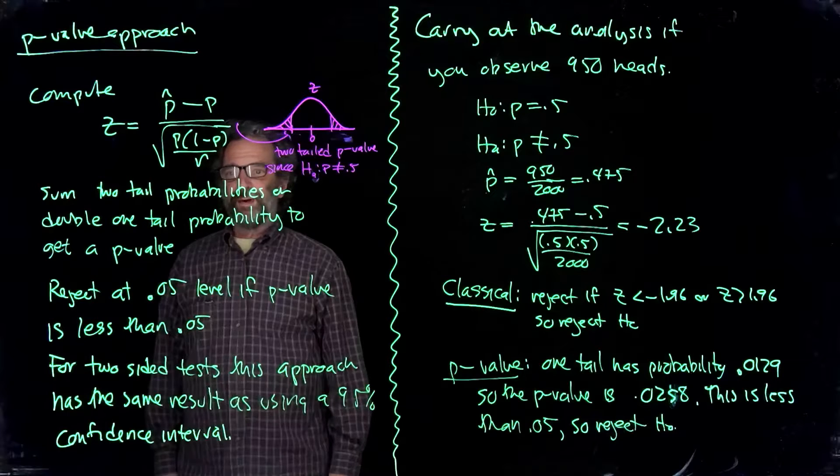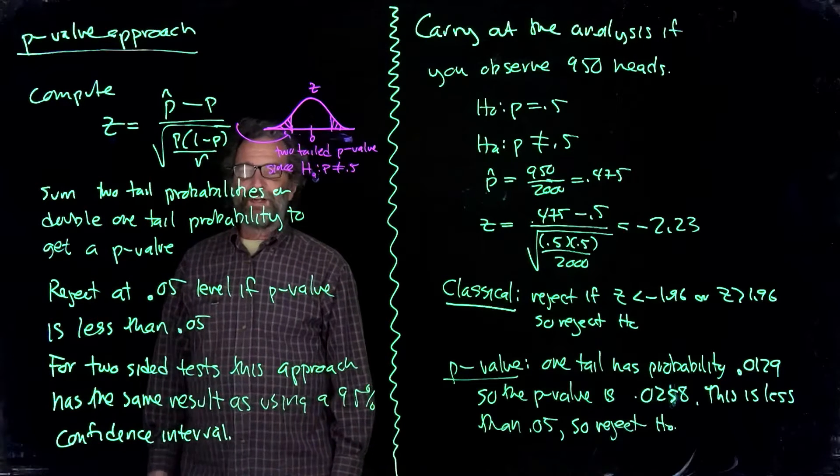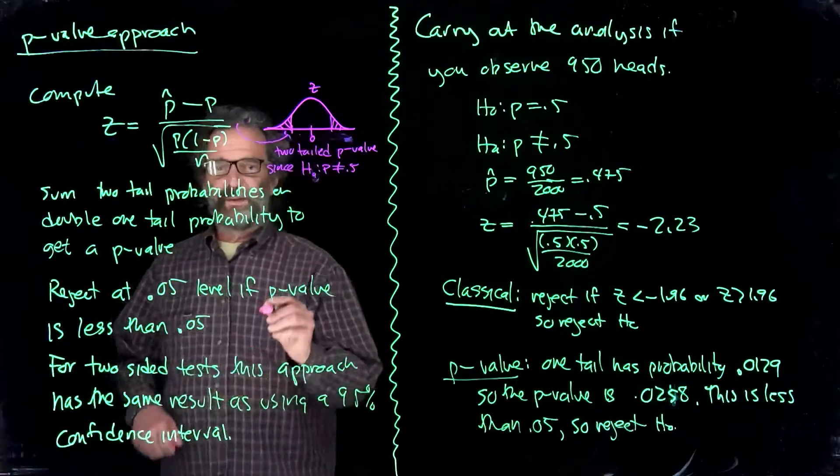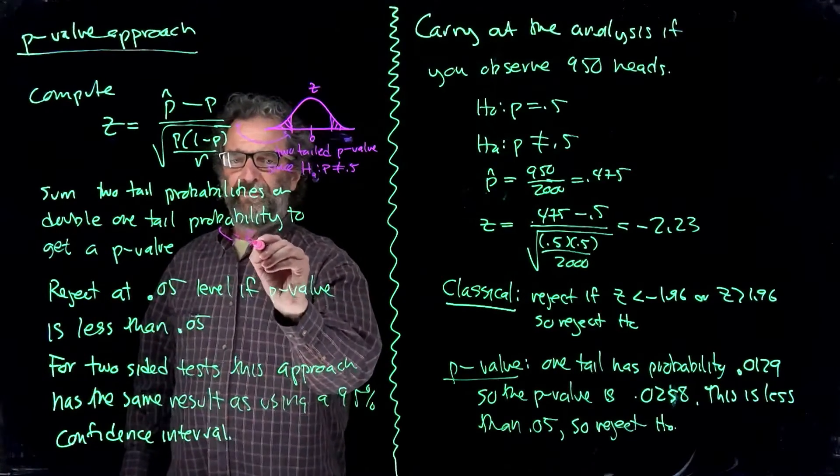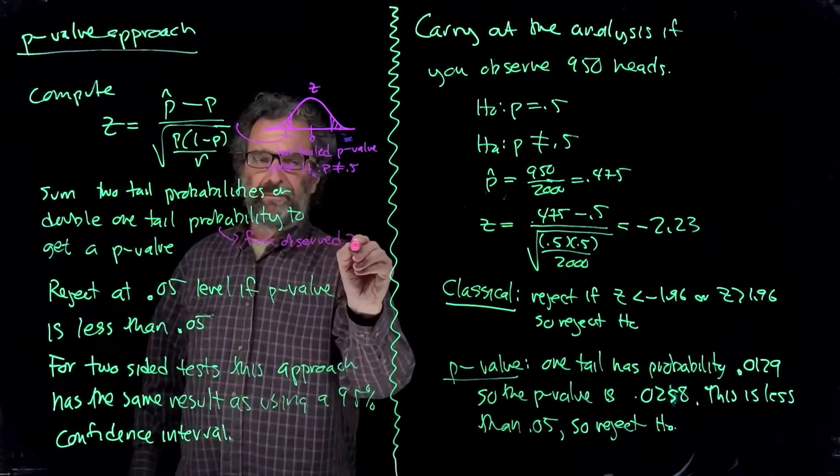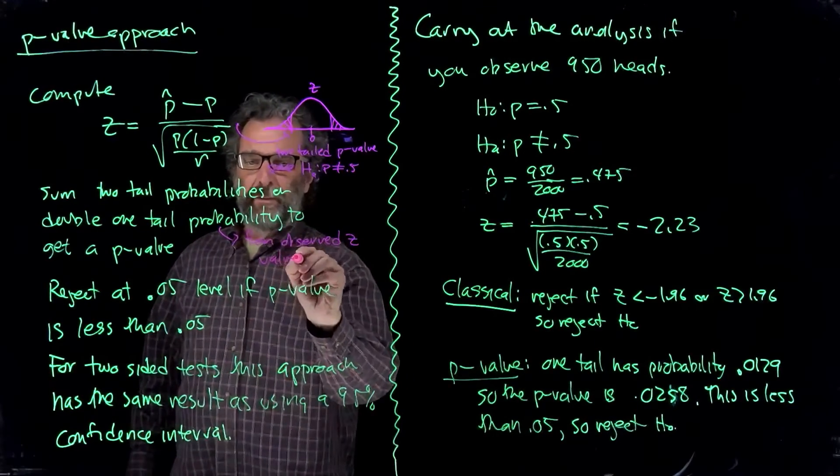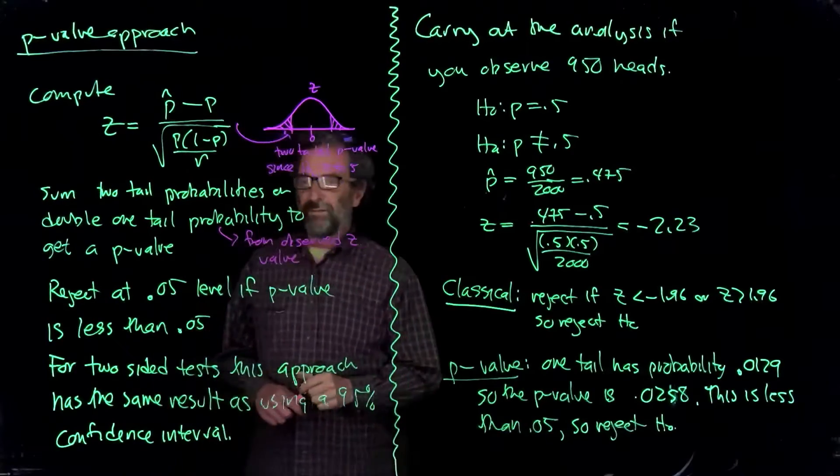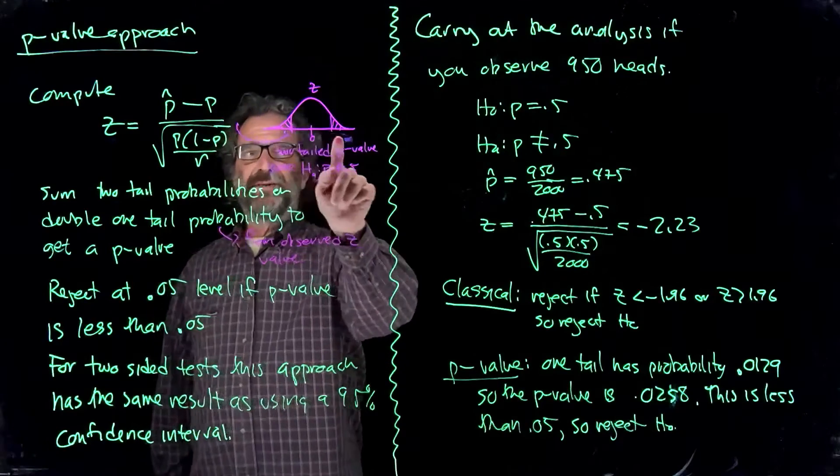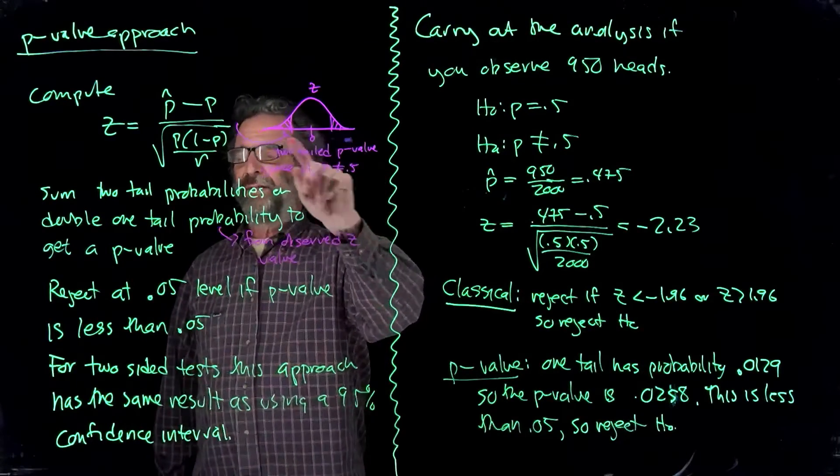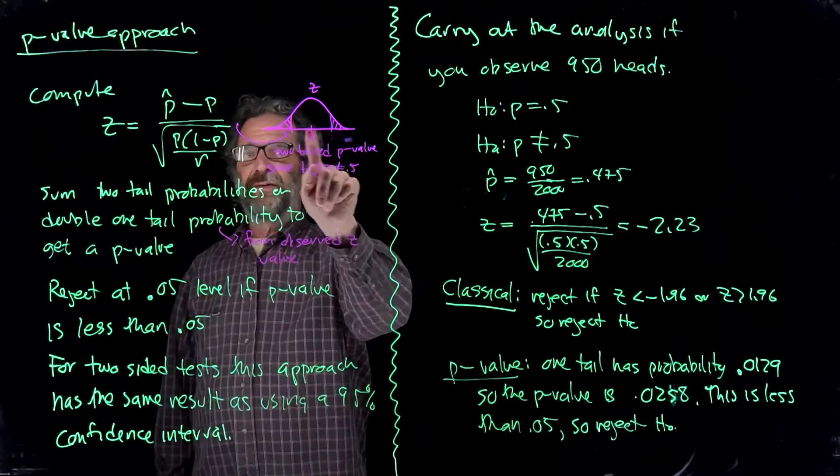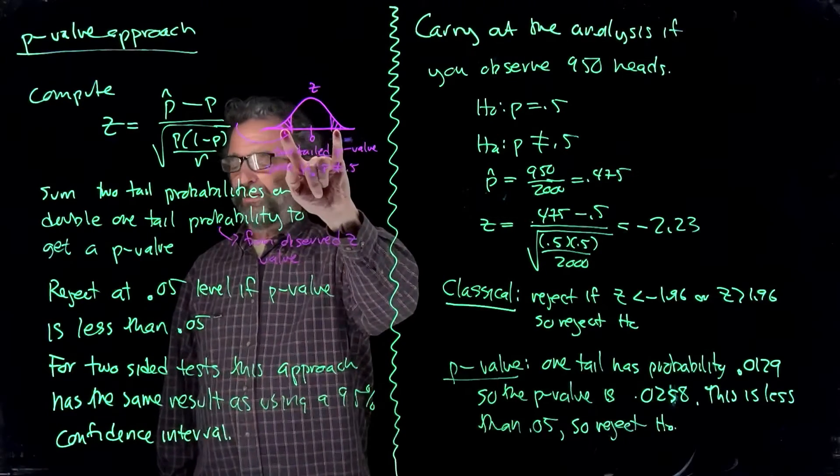So we sum the two tail probabilities coming from the test statistic, or we double one tail probability to get the p-value. So this is computed from the observed z. So you find z and you compute those two tails. I usually just compute one of them. Whichever side you're on, I go to that tail and I'll double that to get the two tails. But you could instead take your z value and change sign and look at the two tails for the two signs. Your choice.